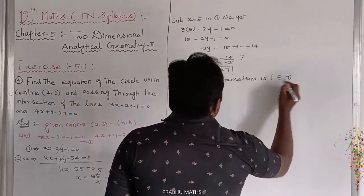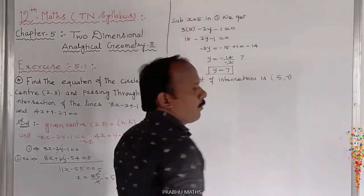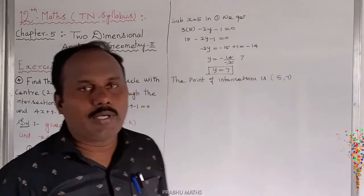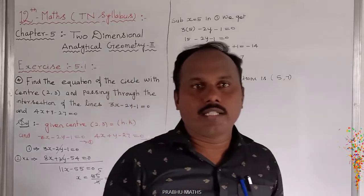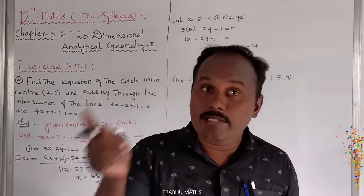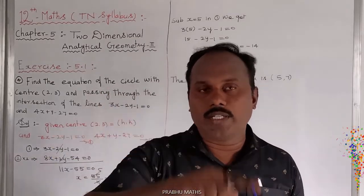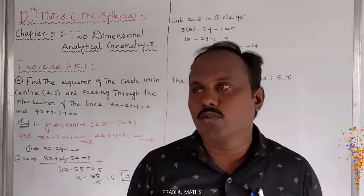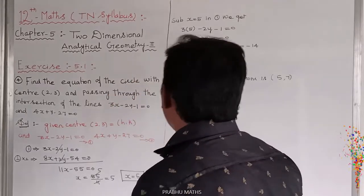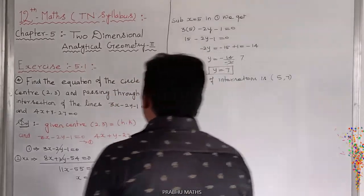The point of intersection is (5,7). The circle passes through this point.